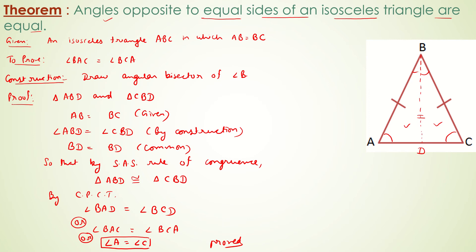Therefore, we can say that angles opposite to equal sides — AB and BC are the two equal sides — the angle opposite to AB is angle C, and the angle opposite to side BC is angle A. These are opposite to equal sides, and therefore they are equal.